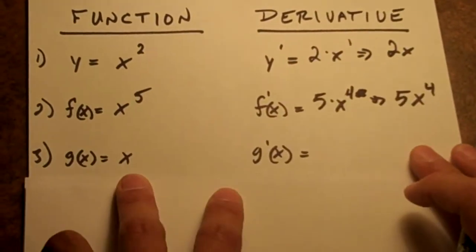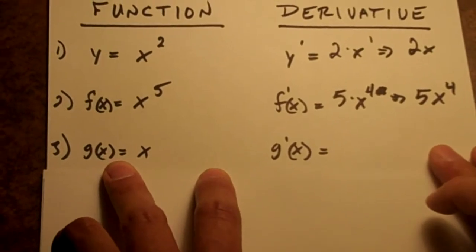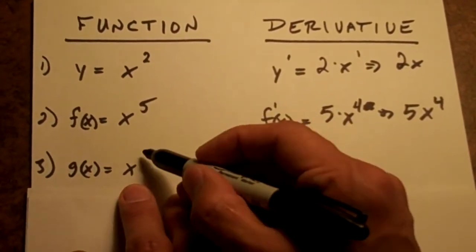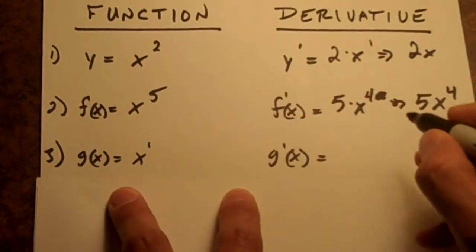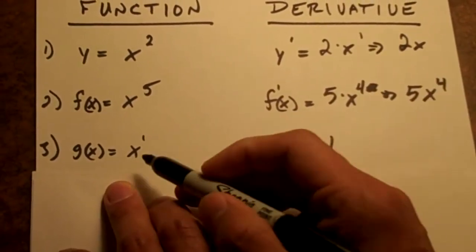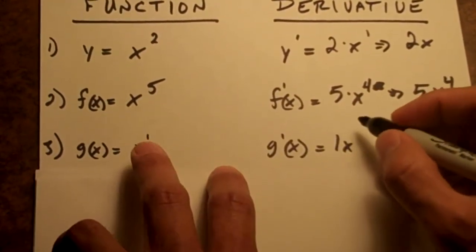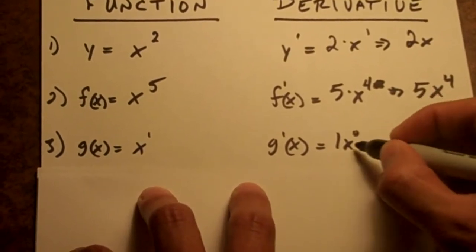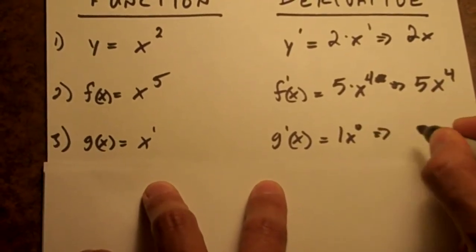Moving on. Same sort of deal. If you have some function of x, this is the same thing as saying x to the 1. If we bring that out front, we just have 1. And then x to the 1 minus 1 is 0. x to the 0 is 1. So you just come out with x.